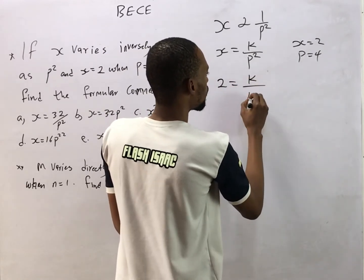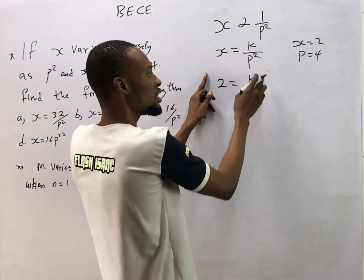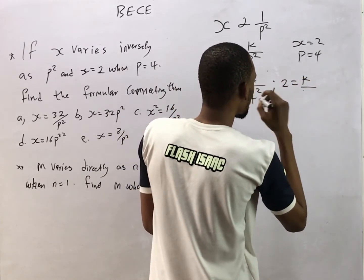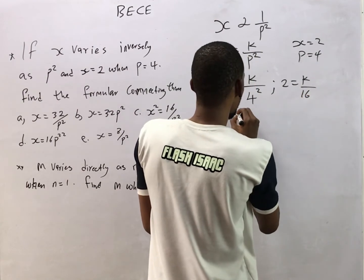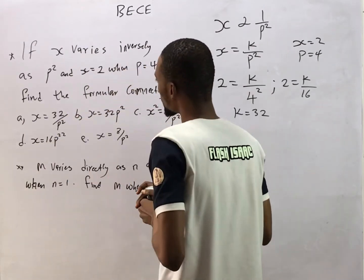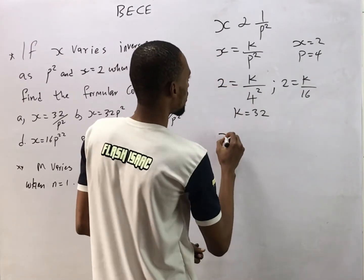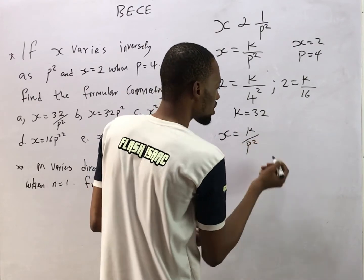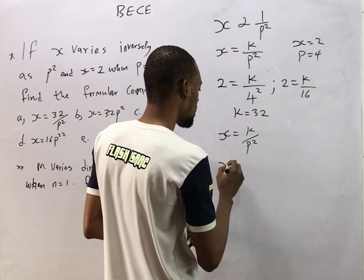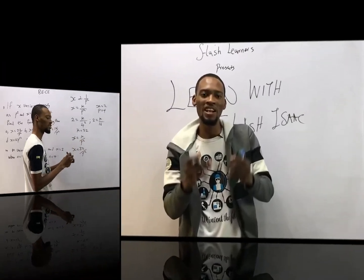Substituting s = 2 and p = 4: 2 = k/4² = k/16, so k = 32. That is the value of the constant. Now they say find the formula connecting them — the formula is s = k/p², and substituting k = 32, we get s = 32/p². So that is your answer.